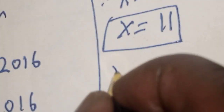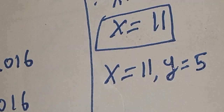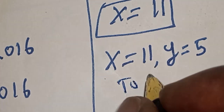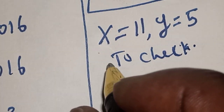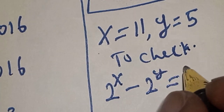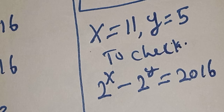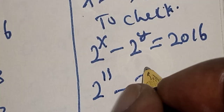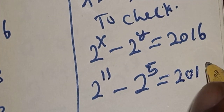Our final answers are X equals 11 and Y equals 5. We can check to confirm. The given equation is 2 raised to power X minus 2 raised to power Y equals 2016. With X equals 11 and Y equals 5, this becomes 2 raised to power 11 minus 2 raised to power 5, which equals 2016 if you press your calculator.